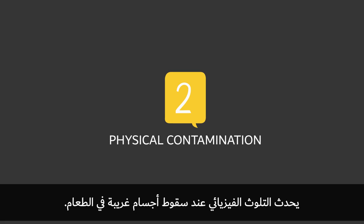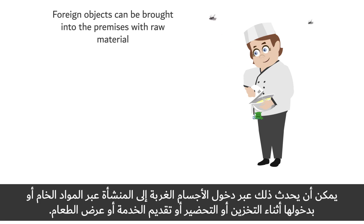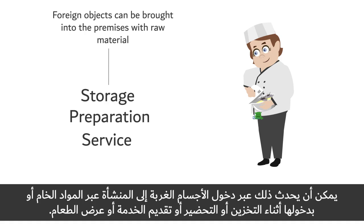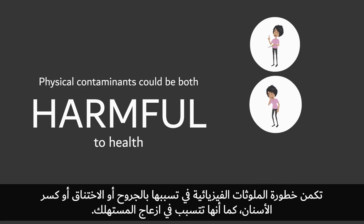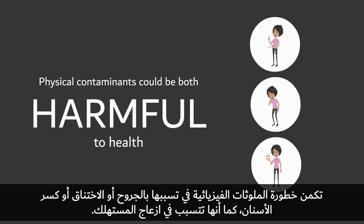2. Physical contamination occurs when foreign objects fall into the food. Foreign objects can be brought into the premises with raw materials or introduced during storage, preparation, service, or display. Physical contaminants could be both harmful to health by causing cuts, choking, and broken teeth, and objectionable by being unpleasant for the consumer.